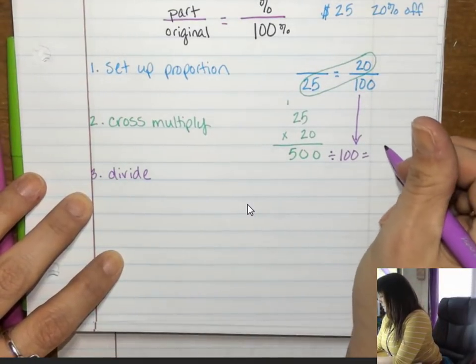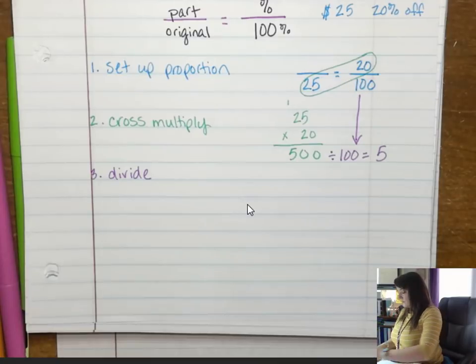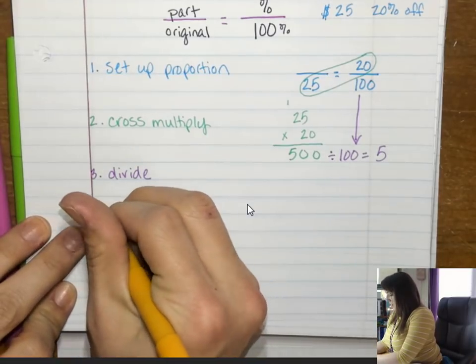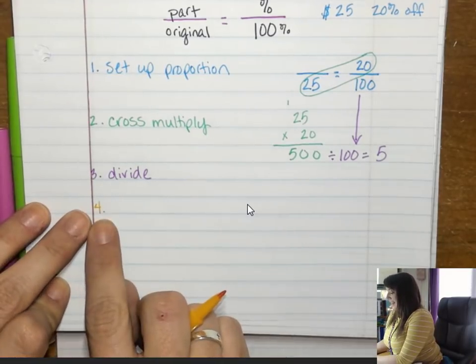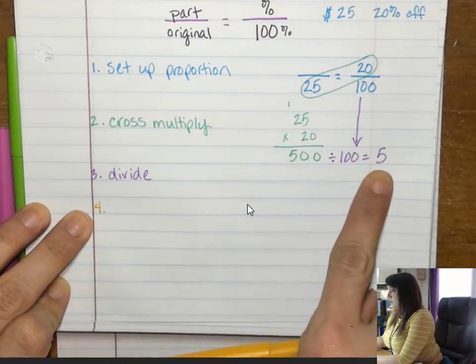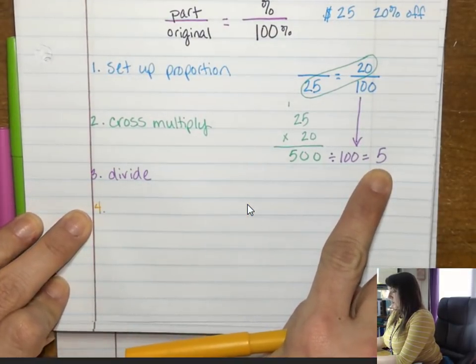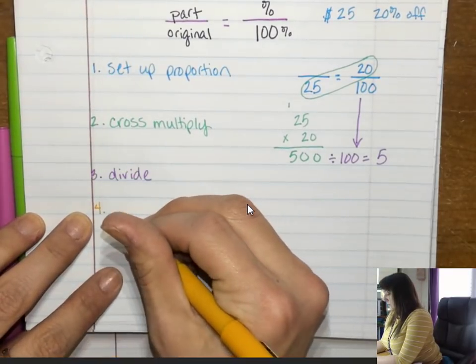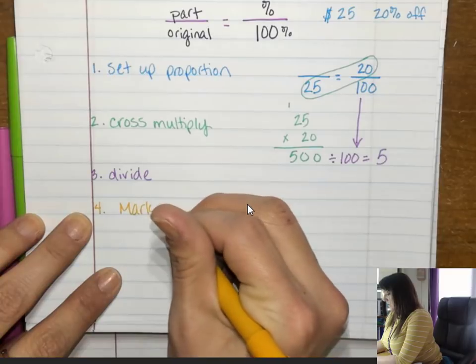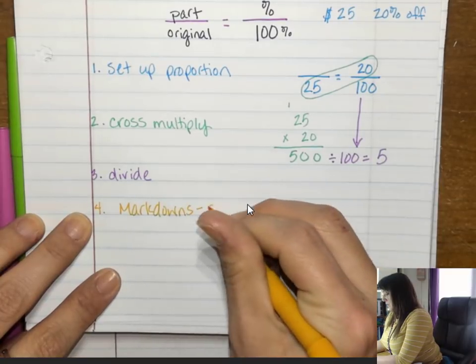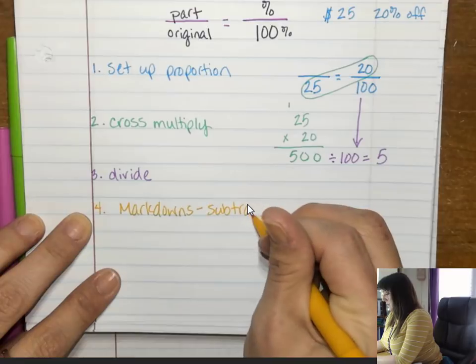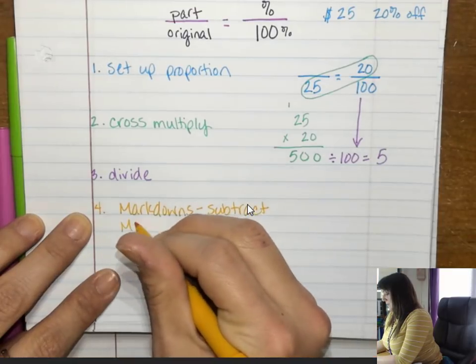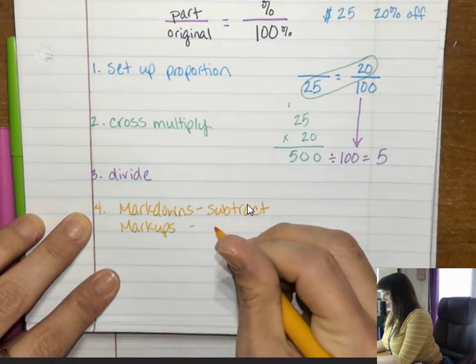So this is $5. Now, last thing you have to do - and this is the part we're going to mess up on and that's okay because it just happens because we forget - if it's a markdown you have to subtract from the original, if it's a markup you have to add to the original. So markdowns subtract, markups we have to add.